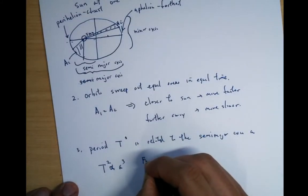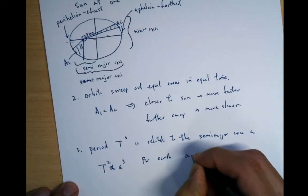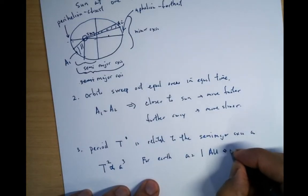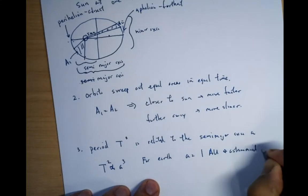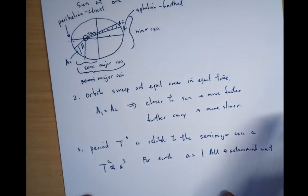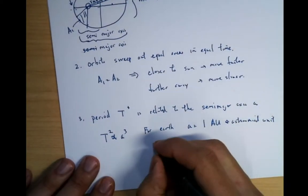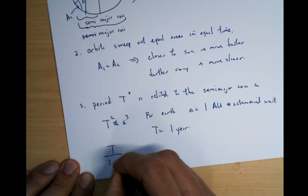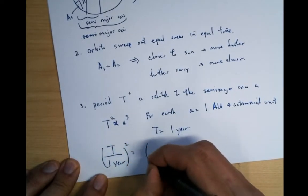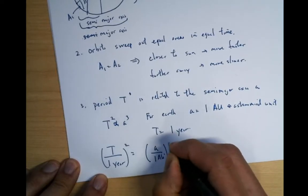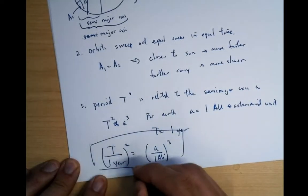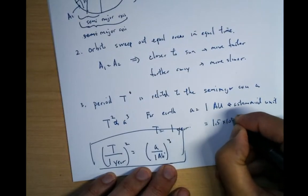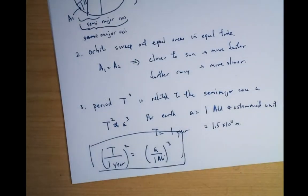So for instance, for Earth, A equals 1 AU because the definition is one astronomical unit is the average distance the Earth is away from the sun. T is one year. So basically, what we have is that T over one year squared is equal to A over 1 AU cubed. So if you want to figure out stuff, this is what you have to do. And let me just write down numbers. It's 1.5 times 10 to 11 meters. It's basically one AU.